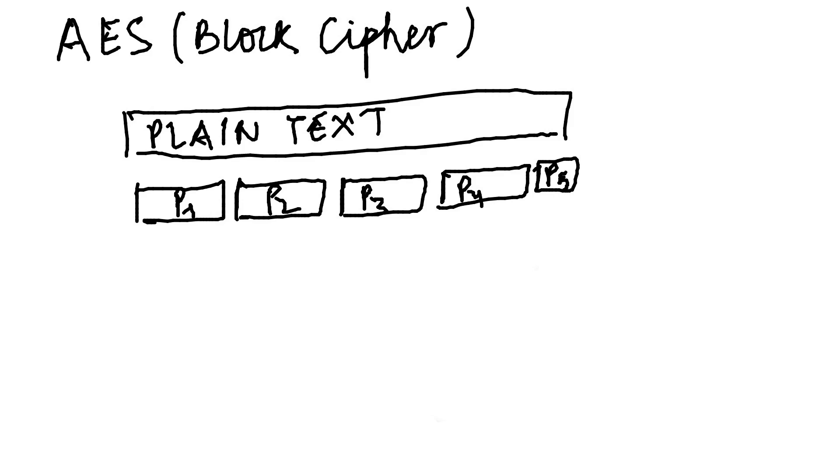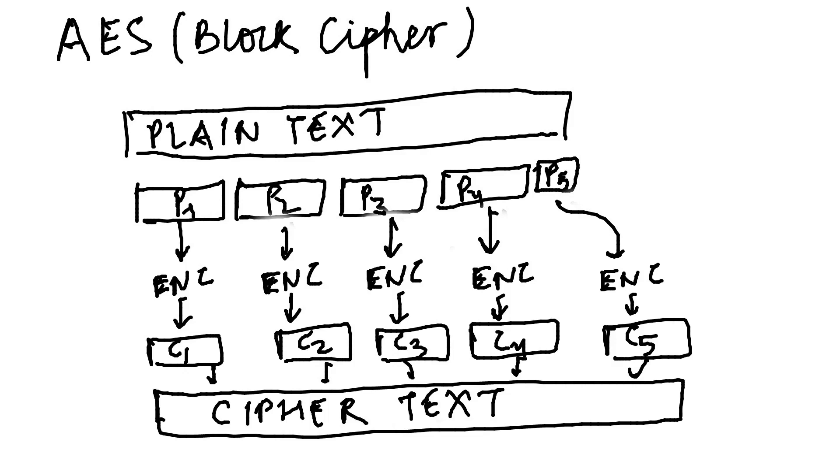AES is a block cipher. That is, AES breaks the plain text into chunks of blocks and then operates independently on each block. Each block is operated upon to produce its corresponding ciphertext. All these ciphertexts are then appended to form the complete ciphertext.